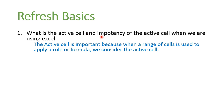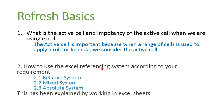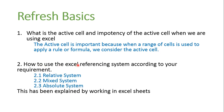When we are using Excel, the active cell is most important because when a range of cells is used to apply a rule or formula, we consider the active cell. You will also learn how to use Excel's referencing system according to your requirement: the relative system, mixed system, and absolute system. There are three types of referencing systems in Excel, and each is discussed with examples for you to easily understand.